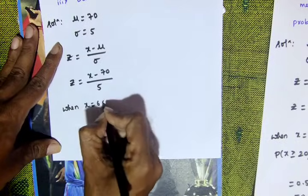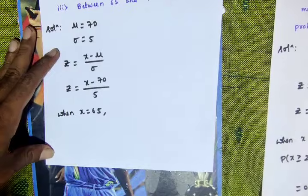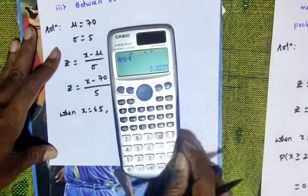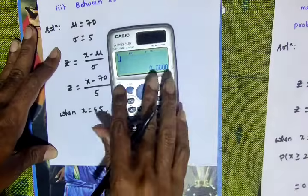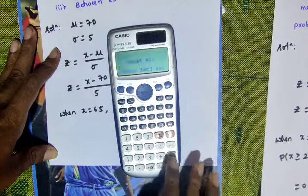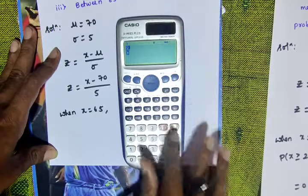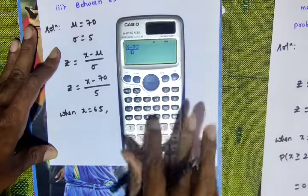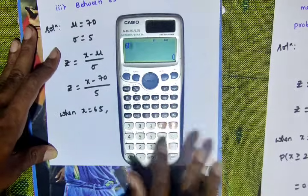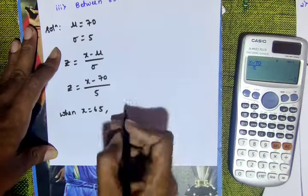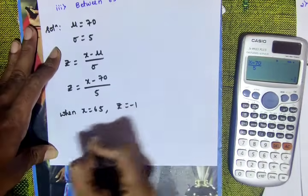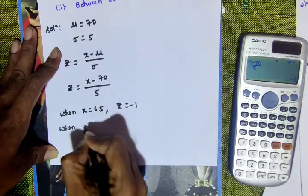When X equals 65, calculate: (65 minus 70) divided by 5, so Z is minus 1. When X equals 75, calculate: (75 minus 70) divided by 5, so Z is 1.